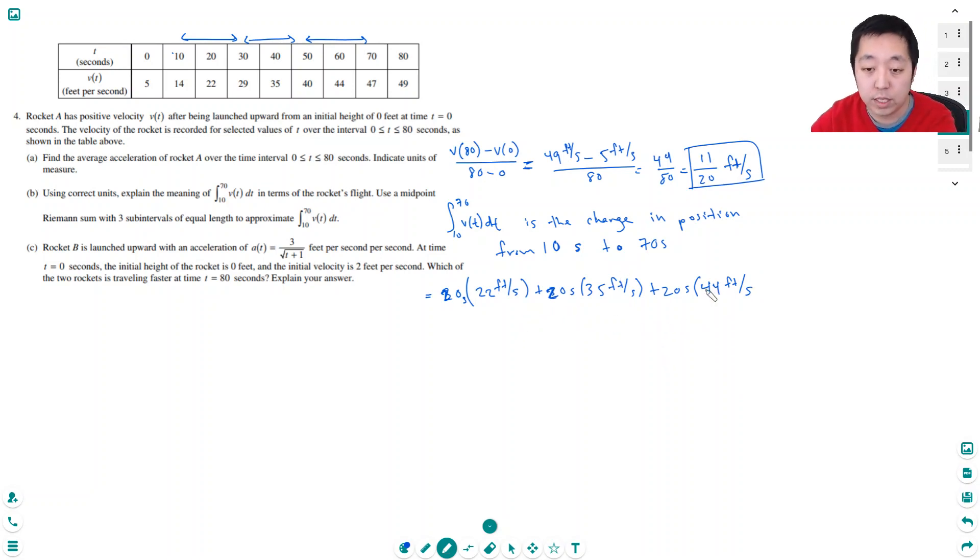So then I just simply multiply all these out. This is 440 feet plus 700 feet plus 880 feet. So 880 plus 4 is 1320, plus 700 is 2,020 feet. That's my approximation.